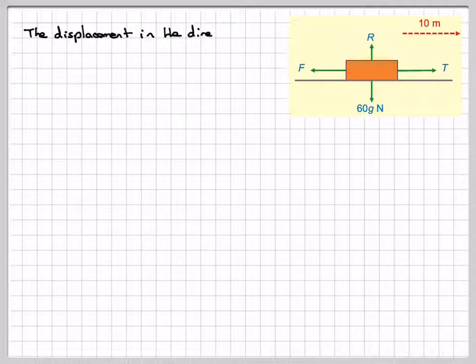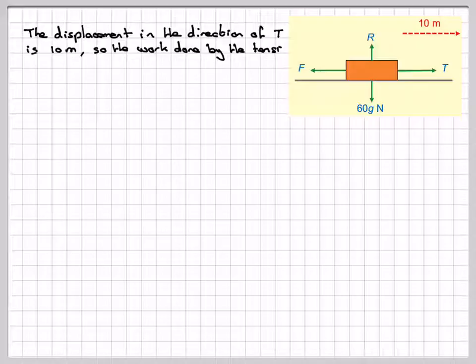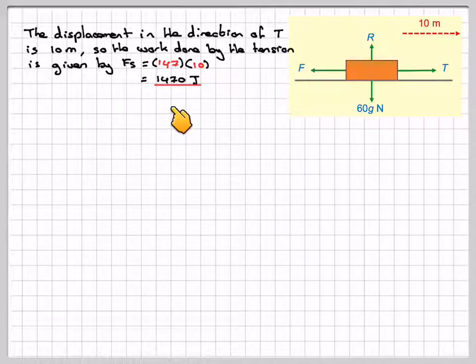Now, the displacement in the direction of T is 10 metres, the block has moved along 10 metres, so the work done by the tension is given by FS, which is 147 times 10, which is going to be 1470 joules.